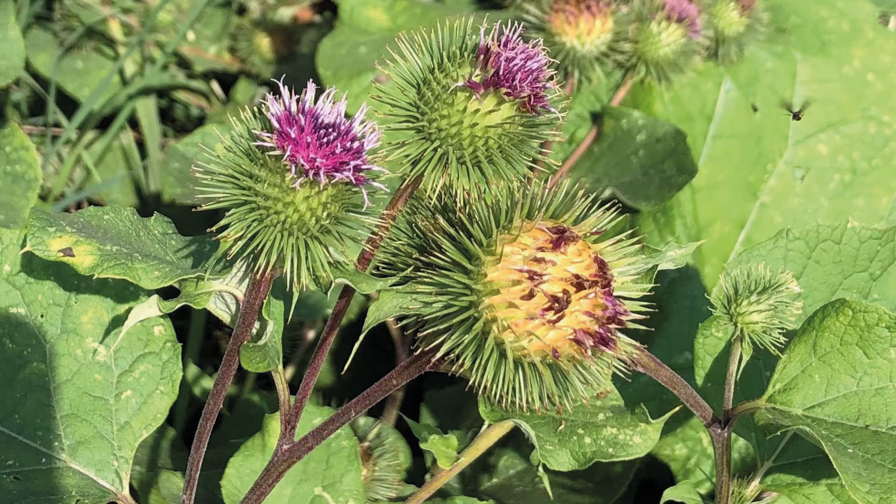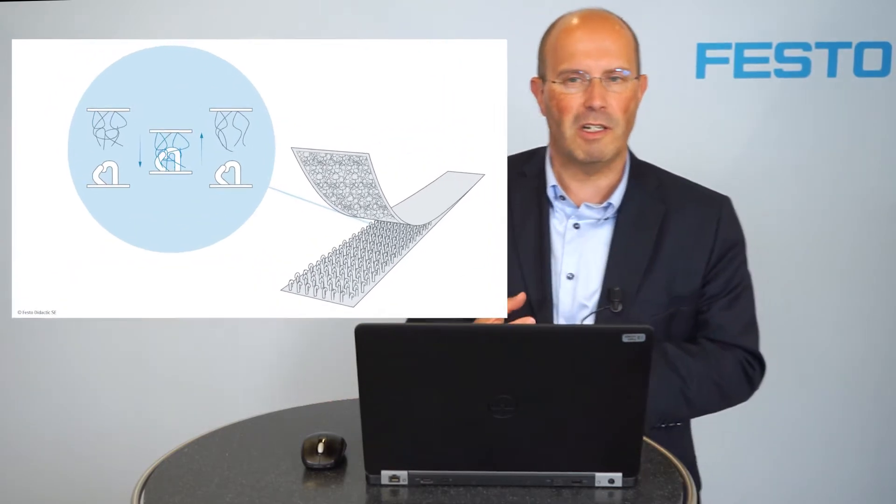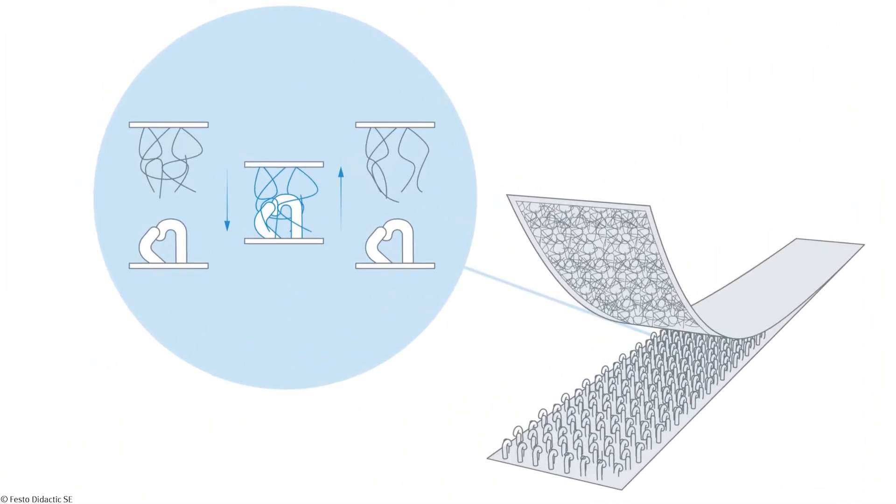A Swiss guy called George de Mistral in the 1940s had a dog and he walked every day with the dog in the fields and forest. Every time he came back the dog had a lot of these prickly heads in his fur. After removing it again and again he wanted to know why these things are always in the hairs of the animal. He took a microscope and had a closer look. What he found was a structure of little hooks on these prickly heads and these hooks interlocked with the hair of the animal. Based on this idea he developed the hook and loop fastener using the same principle and created a whole company producing this thing.